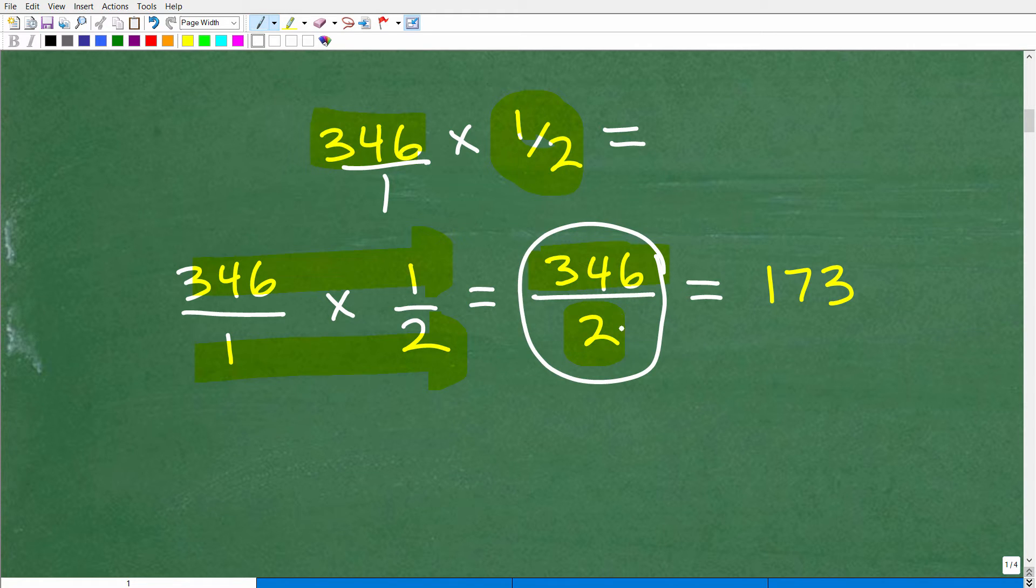Now at this point, you're going to want to reduce this fraction. So two goes into two, one, and 346, two goes in 346, 173. Or you can look at this as a division problem. You can be like, okay, 346, divide that by two and you'll get 173. Or you could reduce this fraction and you'll get 173 over one.